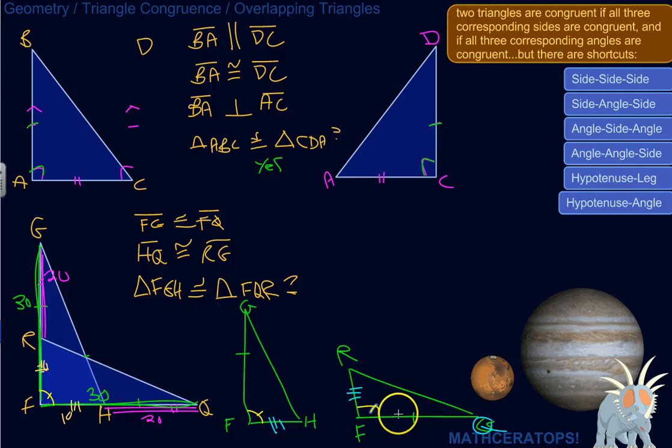We've got a congruent side, angle in between them, another congruent side, another pair of congruent sides. So again, by side-angle-side, these two are congruent.